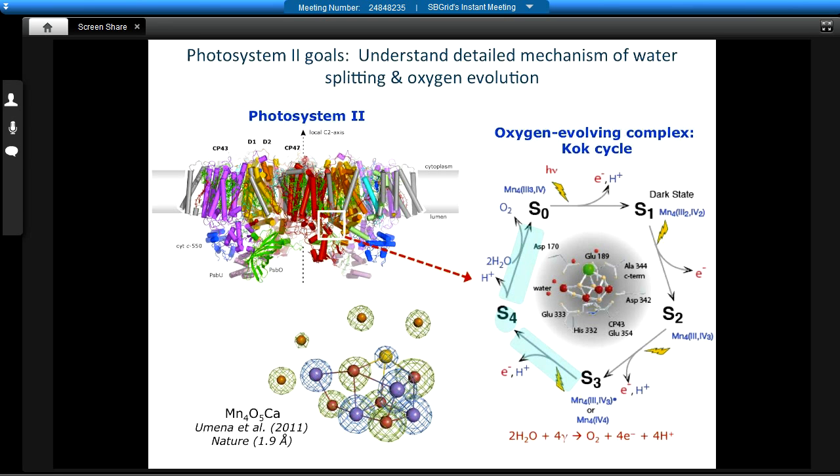The other one that I'm involved with is a collaboration among many groups. The PI on this is Vitaly Yachandra, also at Berkeley Labs. We're looking at photosystem II. That's the protein in green leaves that's responsible for taking water and splitting it to create oxygen—that's the oxygen in our atmosphere—and it releases hydrogen. The energy from this in the green leaf is put into the carbon fixation process.